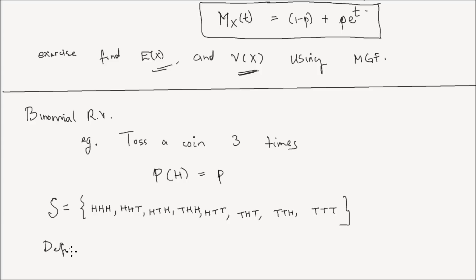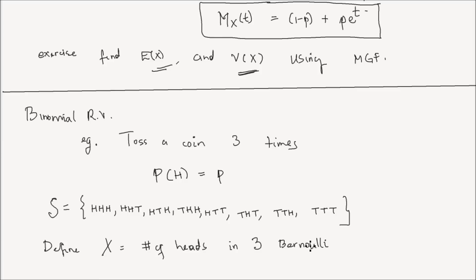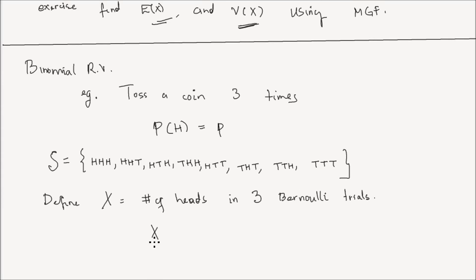Define the random variable x to be the number of heads, or the number of successes, in the three Bernoulli trials. I say Bernoulli trials because each coin toss is a Bernoulli random variable, and each of those Bernoulli trials are independent. When I have such a random variable, I say x follows a binomial distribution with number of trials n equal to 3 and probability of success p.